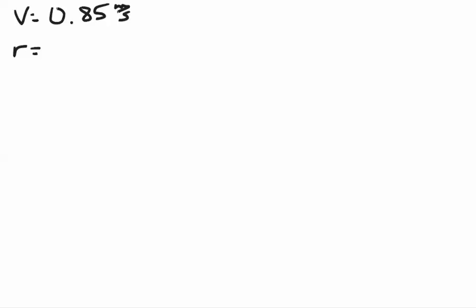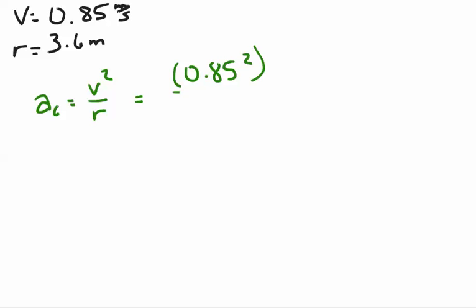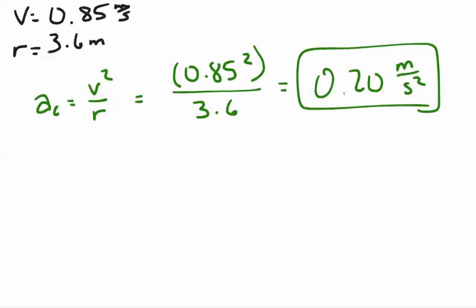Let's look at another example. What is the centripetal acceleration of a child 3.6 meters from the center of a merry-go-round, if the child's speed is 0.85 meters per second? We know speed equals 0.85 m/s and radius equals 3.6 meters. Since we have speed and radius, we use: centripetal acceleration equals v squared divided by r. That's 0.85 squared divided by 3.6, which gives an answer of 0.20 meters per second squared — that is the centripetal acceleration of the child on the merry-go-round.